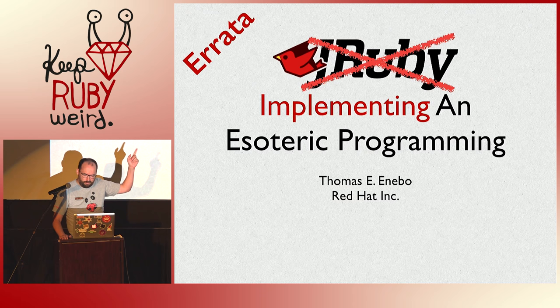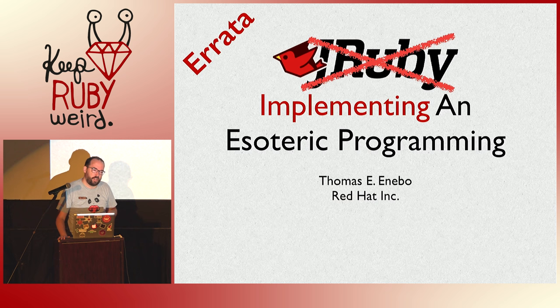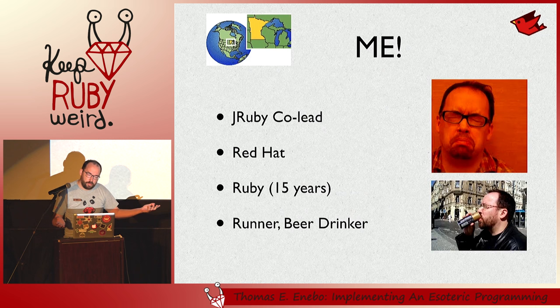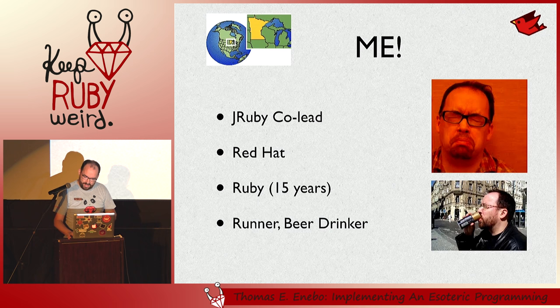You can see the JRuby logo or masthead in the keynote, but it's not a JRuby talk. It's about an esoteric programming language. I do not look like this, but it is my avatar. I co-lead the JRuby Project, I work at Red Hat, I obviously know Ruby. I'm a craft beer drinker, so if anyone knows a good brewery in the Austin area, I'll be here until Sunday morning, let me know.